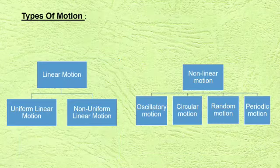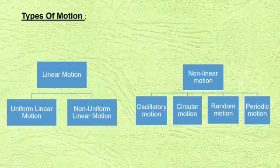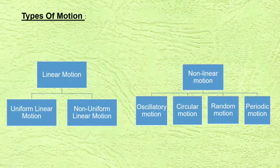So, let's learn about types of motion. There are two types of motion: linear motion and non-linear motion. Under linear motion, there are two types: uniform linear motion and non-uniform linear motion. Under non-linear motion, we have oscillatory motion, circular motion, random motion, and periodic motion.